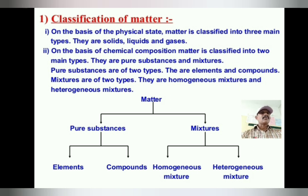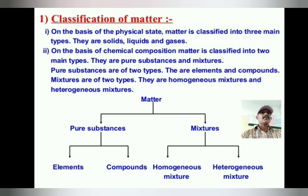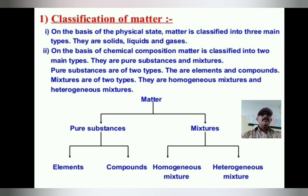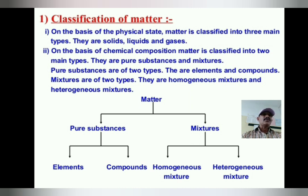Elements are called pure substances, and compounds are also called pure substances because they are formed by combining elements. Mixtures are of two types: homogeneous mixtures and heterogeneous mixtures. The flowchart shows matter divided into pure substances and mixtures, with pure substances sub-divided into elements and compounds, and mixtures sub-divided into homogeneous and heterogeneous mixtures.